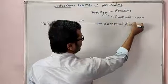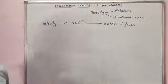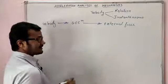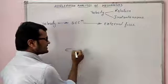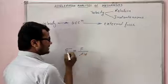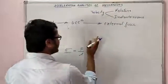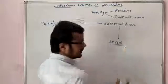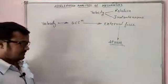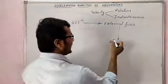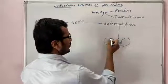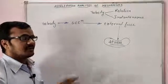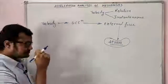So analysis of acceleration will lead us to determine the values of external force. Now, if some external force is acting on a mechanism or a link, it will produce some internal resistance — that is, stresses. Stress is nothing but force upon area. So when we are talking about external force, we are actually talking about the different stresses acting on each part of the mechanism.